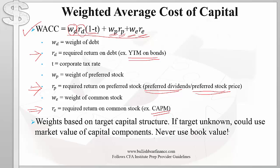We have not talked much about the weights of these capital components. The weights are supposed to be based on the target capital structure. So if we know that a company intends to use 40 percent debt, 10 percent preferred shares, and 50 percent common shares, those are the weights we should use in this equation. On the exam they would tell you the target capital structure. If they don't, we could use the market value of the capital components, and we assume that reflects the target capital structure of the company.